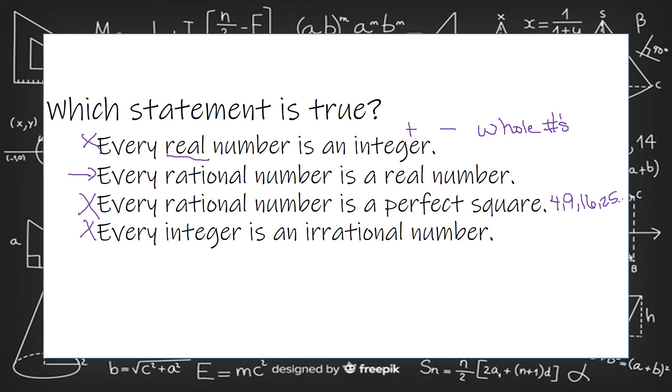If you think back to the picture that you saw, it has real numbers and then all the smaller parts of those. And rational is a category of a real number.